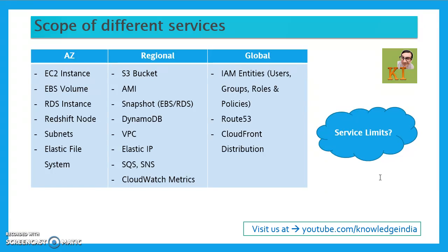DynamoDB is similarly regional. CloudWatch metrics are also regional — CloudWatch is a regional service. CloudTrail is also a regional service. Then there are a few global services. IAM entities like users, groups, and roles are global — you create a user and can operate with that user in any region. Route 53 is also global; you do not choose a particular region when creating Route 53 record sets. CloudFront distributions are also global — a distribution is not specific to any region, though it can pick its origin from any region.